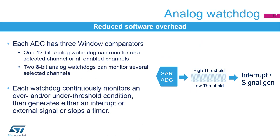Each ADC has three integrated analog watchdogs with high and low threshold settings. The ADC conversion value is compared to this window threshold. If the result exceeds the threshold, an interrupt or external signal can be generated, or a timer can be immediately stopped without CPU intervention.